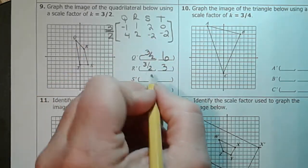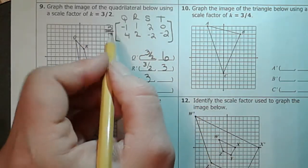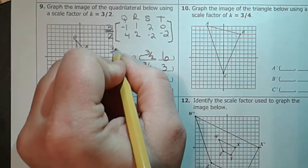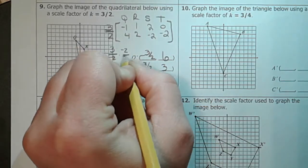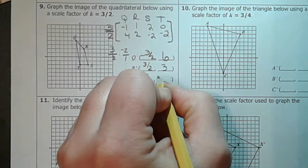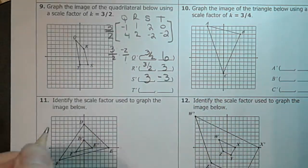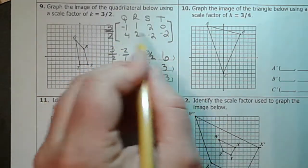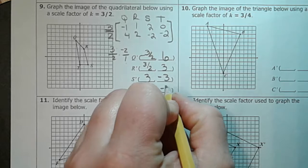Three halves times two, well we just did that one, it's three. Three halves times negative two, again that's three halves times negative two over one, we get negative six over two which gives us negative three. And three halves times zero is zero, three halves times negative two is going to give us a negative three.